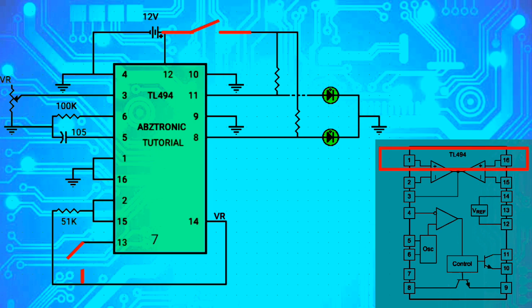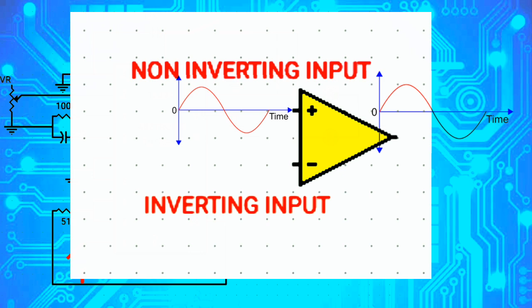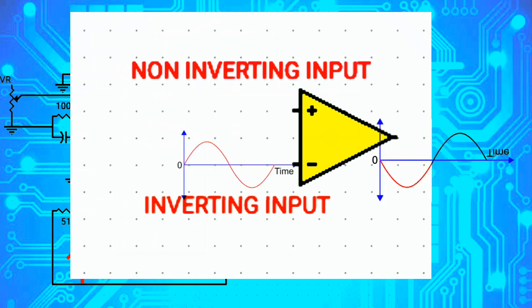Pin 1 and pin 16 are the non-inverting inputs, while pin 2 and pin 15 are the inverting inputs. When an AC signal is fed from the non-inverting input, the output will be the same as the input — both input and output are in phase at 0 degrees. That is the reason why we call it the non-inverting input.